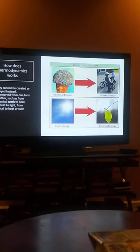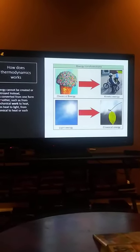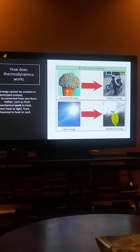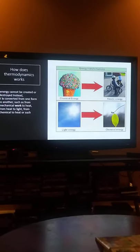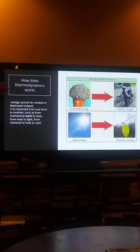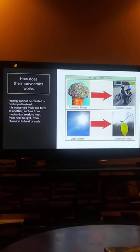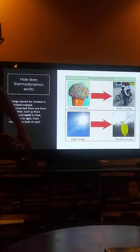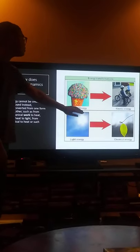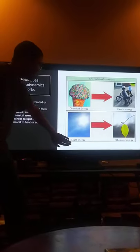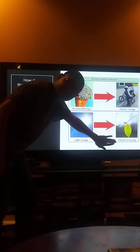How does thermodynamics work? Energy cannot be created or destroyed. Instead, it is converted from one form to another, such as from mechanical work to heat, from heat to light, from chemical, et cetera. Here I got a picture of chemical turning to kinetic energy, and then we got light turning to chemical energy.